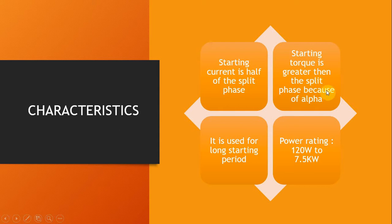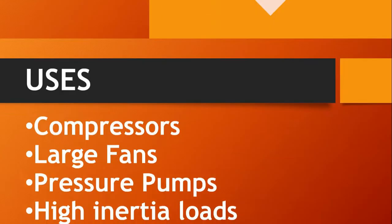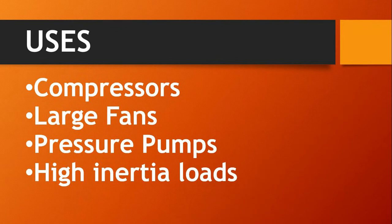The starting torque is greater than the split phase because the alpha is 80 degrees, compared to 25 degrees in the split phase case, which produces a greater starting torque. It is used for machines with long starting periods. The power rating is 120 watts to 7.5 kilowatts. Such motors are used in compressors, large fans, pressure pumps, or other high inertia loads.